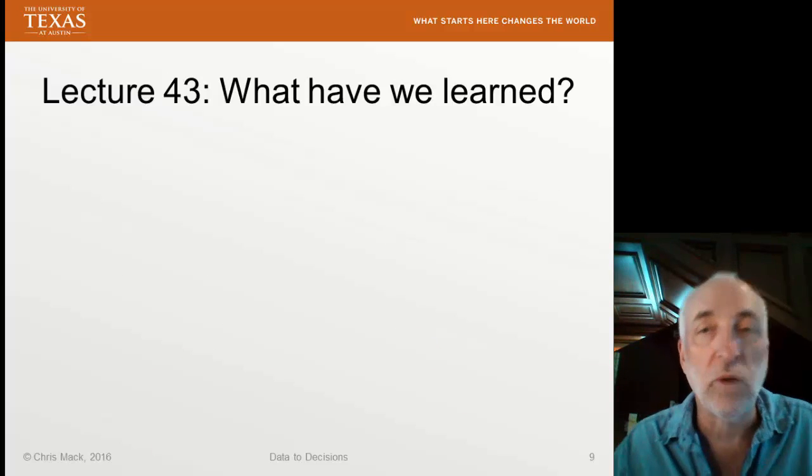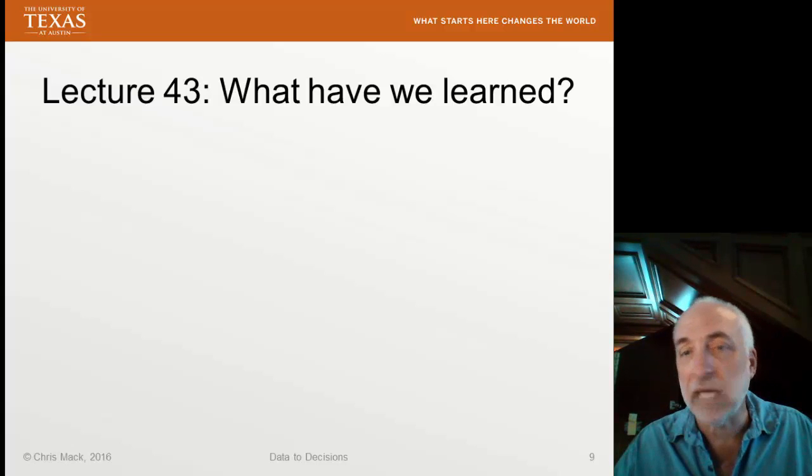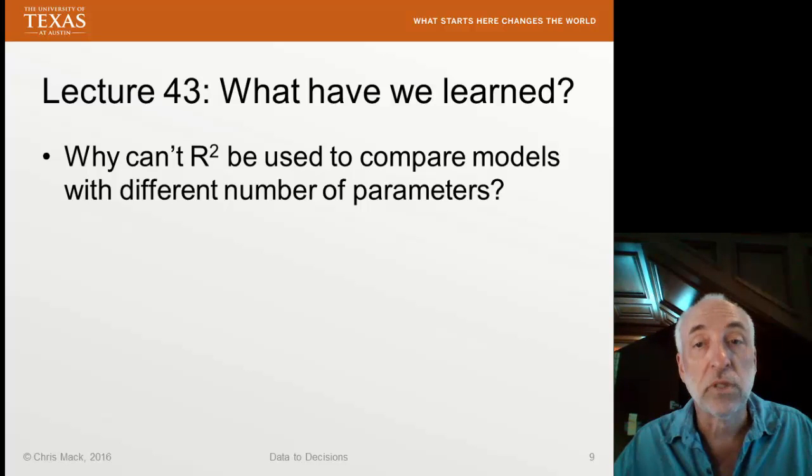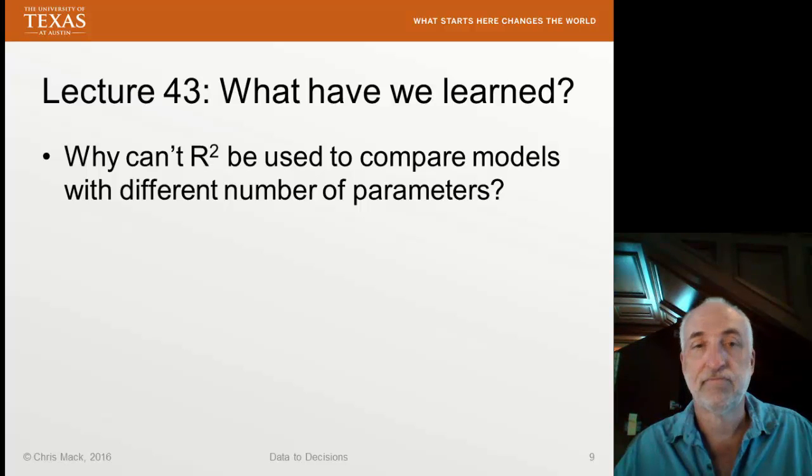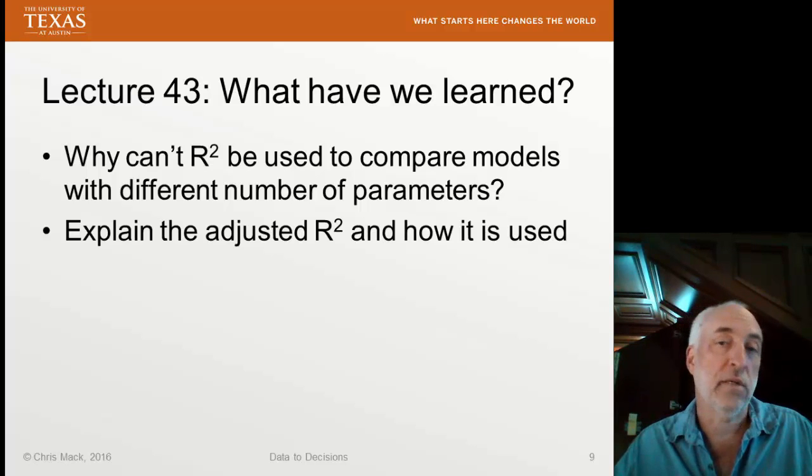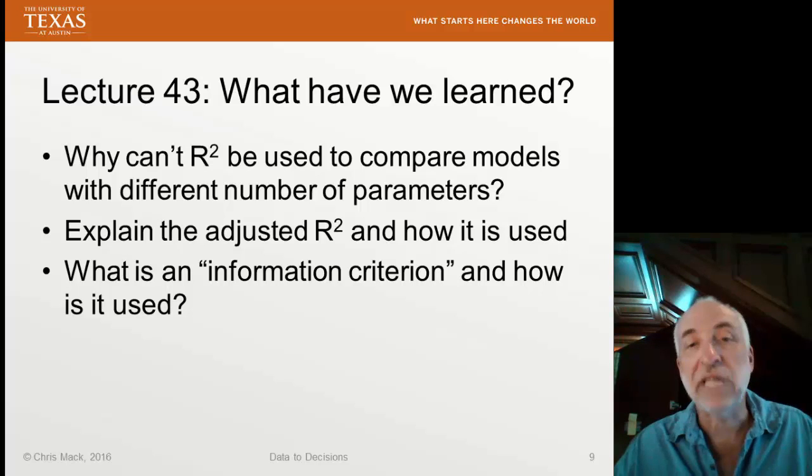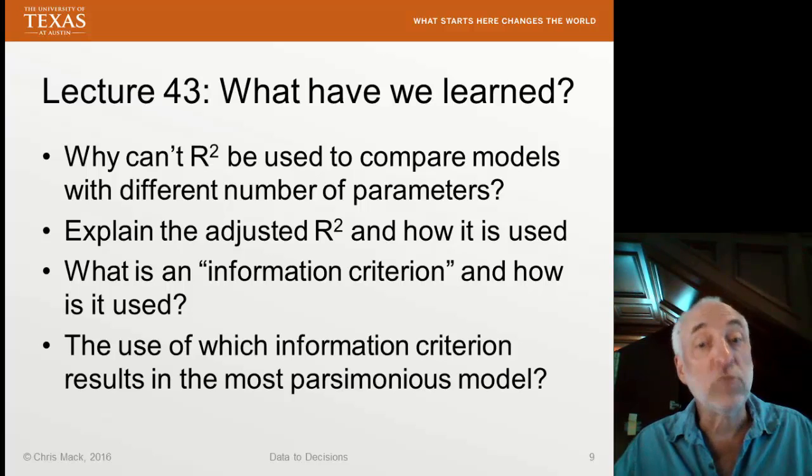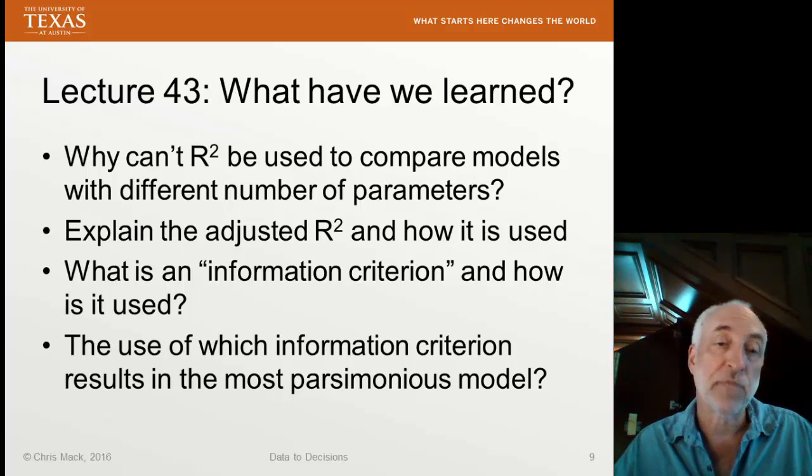All right, let's review what we have done. As always, you should be able to quickly and easily answer each of these questions. Why can't R-squared be used to compare models with different numbers of parameters? Explain the adjusted R-squared and how it is used. What is an information criterion and how is it used? Finally, use of which information criterion of the two that we've talked about results in the most parsimonious model?